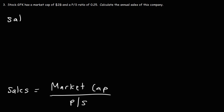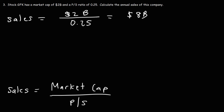So now we can get our answer. This company has a market cap of $2 billion and a PS ratio of 0.25. So 2 divided by 0.25 is 8 — the annual sales is $8 billion. Because the PS ratio is less than 1, the sales of the company ($8 billion) is greater than the market cap ($2 billion).